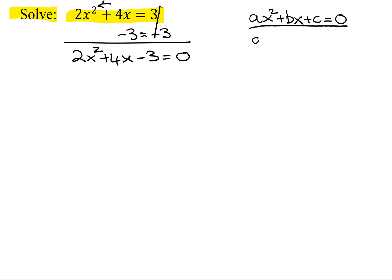For our case, a is the coefficient of the x squared, which is 2. b is the coefficient of the x, which is 4. And c is the constant term.